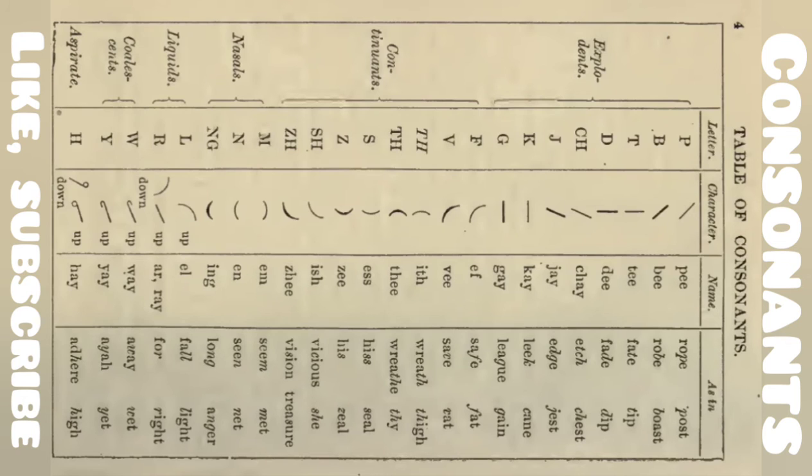These are example words. And last, aspirants, which are denoted as H. We pronounce it as H, hey. These are aspirant-related words.